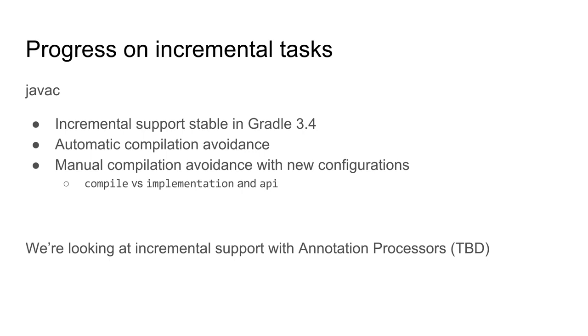One aspect we'll introduce in 2.5 is the ability for developers to use implementation or API instead of just compile for dependencies. In Gradle 3.4, if you have a library module with a dependency, you can use API if you want consumers to see that dependency on the classpath, or implementation if you want to hide it. If you use implementation and that dependency's API changes, compiler avoidance may not propagate to your consumers — whoever consumes your module won't need to recompile. This adds even more compilation avoidance.